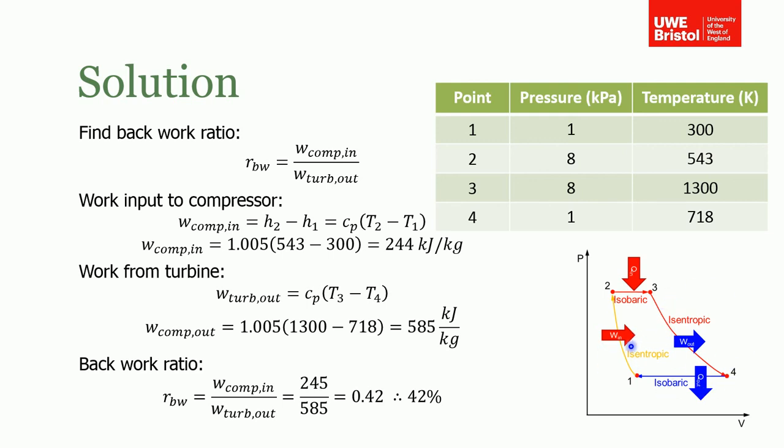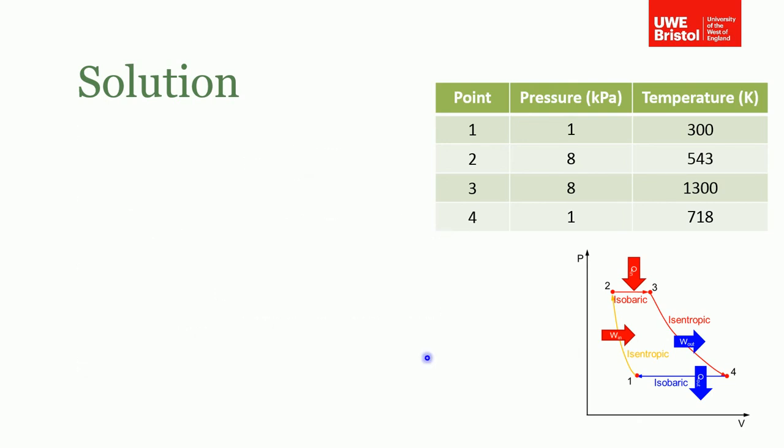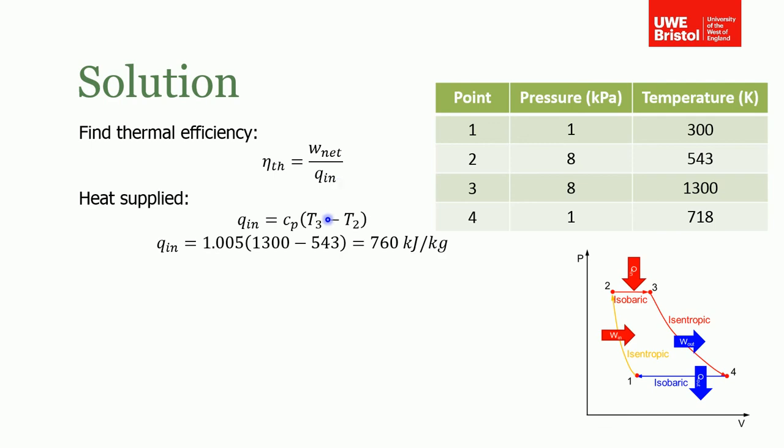The last part of the question was to find the thermal efficiency, which we know is the network that's done over the heat that we have to supply. The heat that we supply is a constant, an isobaric constant pressure process, so we need to use cp. So q_in is cp delta T. We already know what cp is, we've been using that. We use T2 and T3, plug those values in, and we get 760 kilojoules per kilogram.